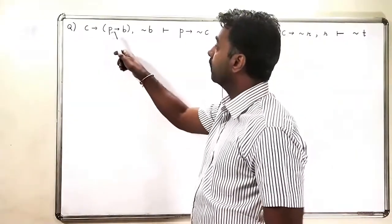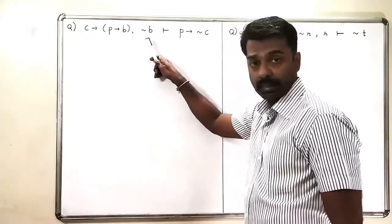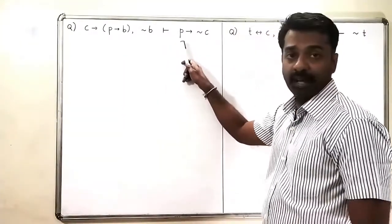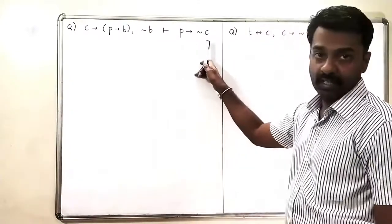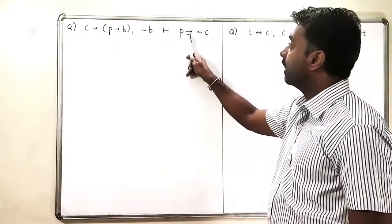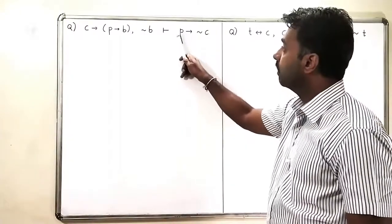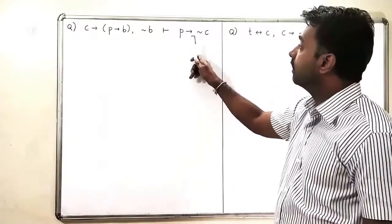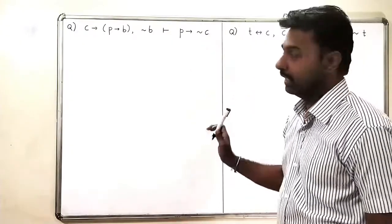The first argument has premises C implies (P implies B) and negation B, and the conclusion is P implies negation C. Since the conclusion is an implication, we will take P into our argument and try to derive negation C.